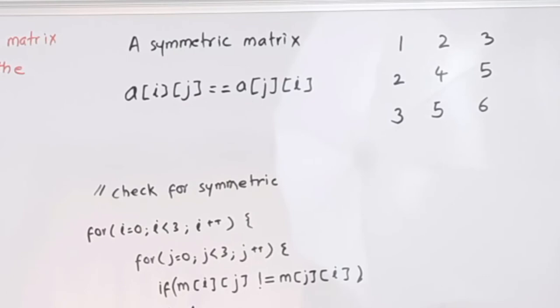So let us first understand what is a symmetric matrix. A symmetric matrix is one in which the element of a[i][j] will be equal to the element of a[j][i]. 'a' is any integer matrix, 'i' is the row number, 'j' is the column number.